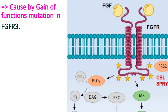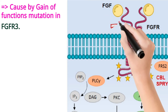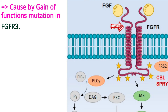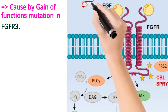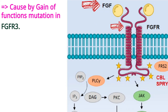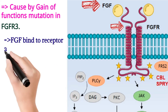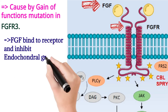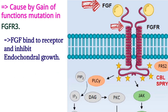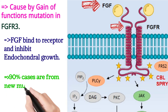In this disease, the FGF receptor is abnormally expressed, which actually inhibits cartilage growth more, resulting in a lesion. FGF binding to the receptor inhibits endochondral or cartilage growth. About 90% of cases arise from new mutations.